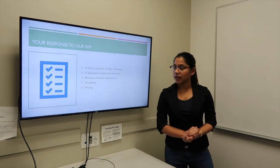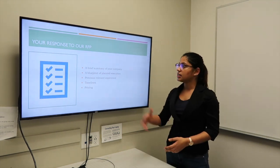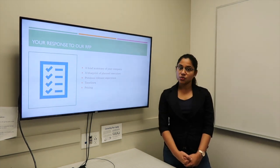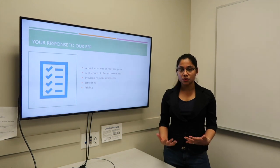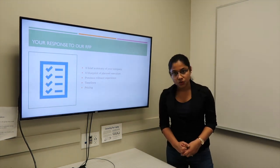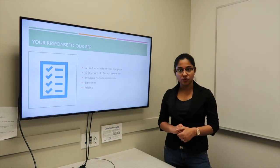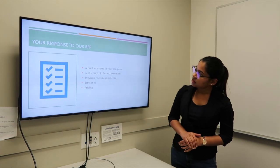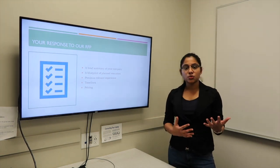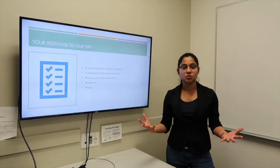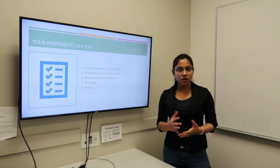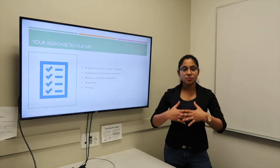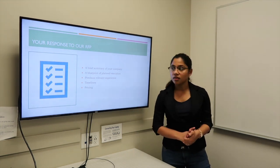Moving on to the response that we are expecting in terms of your document structure, these are typically the aspects that your document should have: a brief summary of your company, we would like to know what you are into what is your history the things that you do. Next one is a blueprint of planned execution that is your approach to implement this IT solution for SPIM. Next one is previous relevant experience, this is very important for us please bear that in mind and last but not the least timelines and pricing. I encourage you to be as innovative and creative when it comes to your response and we would like to know how you can add value to our organization. We would like to know more about what's your approach your methodologies and delivery methods and please feel free to add materials to support these points.